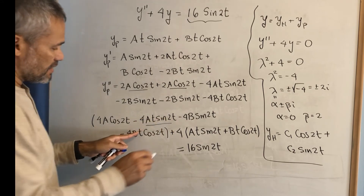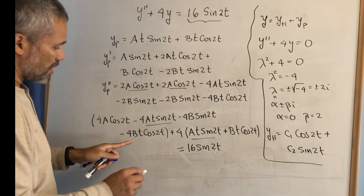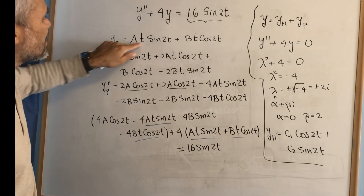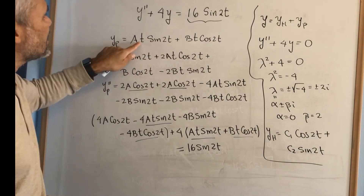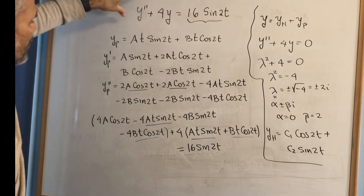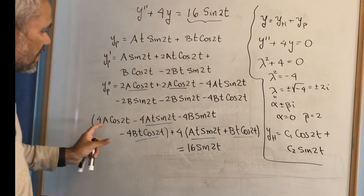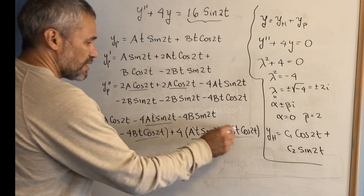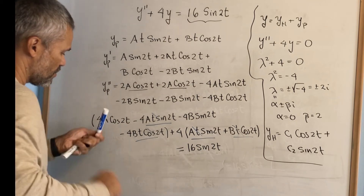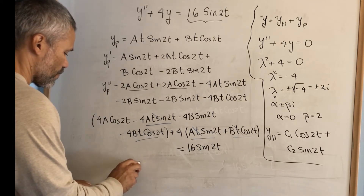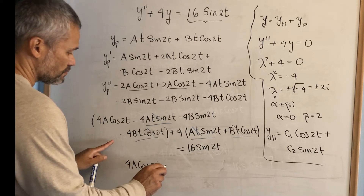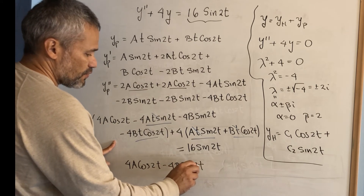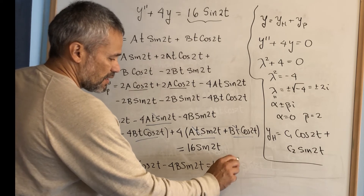This is the second derivative plus 4 times the original function — which is at sine of 2t plus bt cosine of 2t — and we want this to equal 16 sine of 2t. Notice that the t-containing terms cancel out: this term cancels with this term, and this term cancels with this term. Anytime you do a second guess, the t terms that are not part of the original functions must cancel at the end. We end up with: 4a cosine of 2t minus 4b sine of 2t equals 16 sine of 2t.